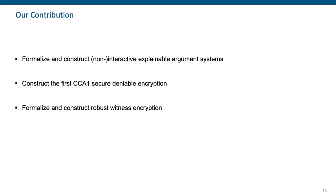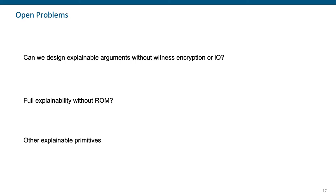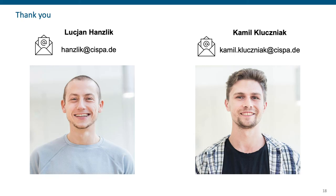To summarize our contributions: we formalized and constructed non-interactive and interactive explainable argument systems, constructed the first CCA1 secure deniable encryption, and formalized and constructed robust witness encryption. We also leave some open problems: whether we can design explainable arguments without witness encryption or indistinguishability obfuscation; whether full explainability can be achieved without the random oracle; and whether we can construct other explainable primitives beyond deniable encryption. Thank you for listening, and if you have questions, feel free to ask us via email.